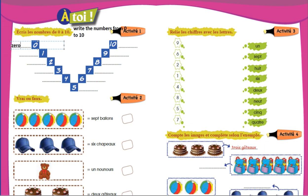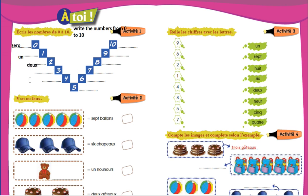Zero means zéro. One — un. Two — deux. Three — trois. Four — quatre.